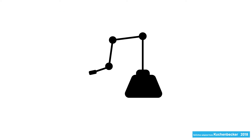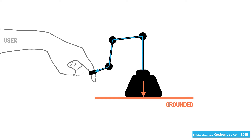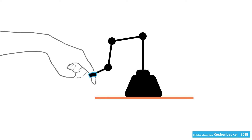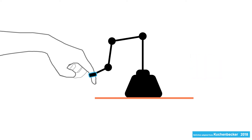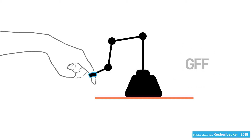A grounded force feedback haptic interface is a robotic device that is mounted to a stationary surface and exchanges kinetic energy with the user. The user typically holds or is attached to an end effector. The end effector can measure and modulate the user's position, orientation, force, or torque. Because the force and motion are mainly felt by our muscles from the connection to the surface, the device is called a grounded kinesthetic or grounded force feedback haptic device, GFF for short.